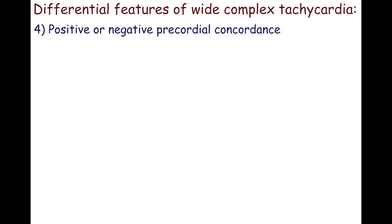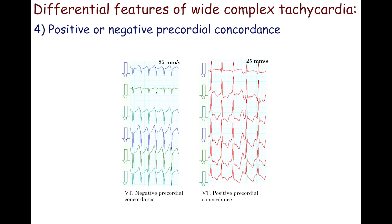The fourth feature is positive or negative precordial concordance. It means that all QRS complexes during the tachycardia are either positive or negative in all precordial leads. This is more typical of ventricular tachycardia than supraventricular tachycardia. However, this is not seen in the right ventricular outflow tract ventricular tachycardia and bundle branch reentrant ventricular tachycardia.